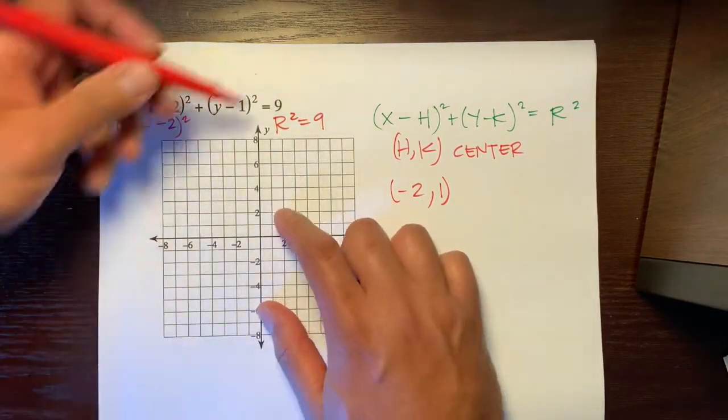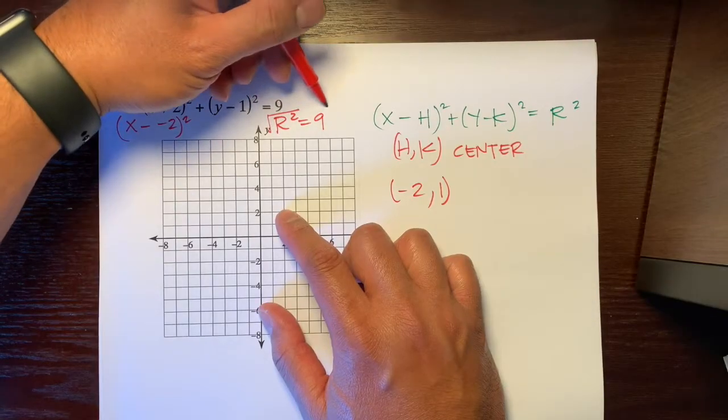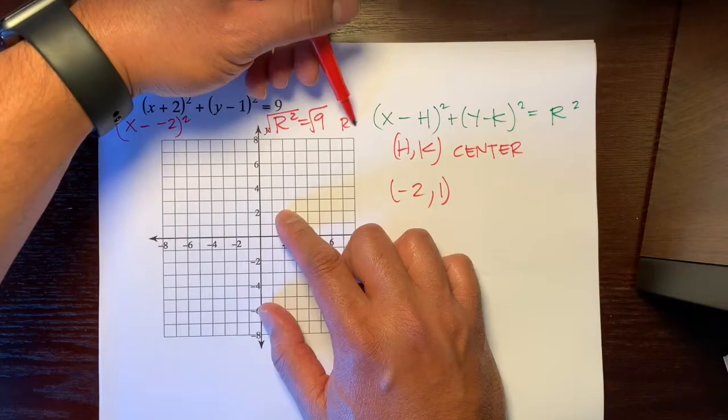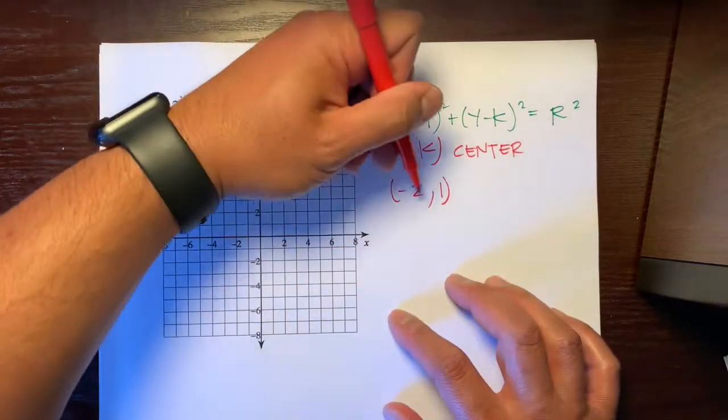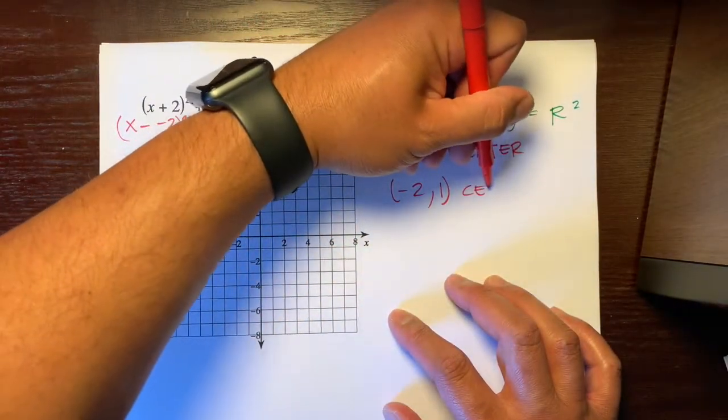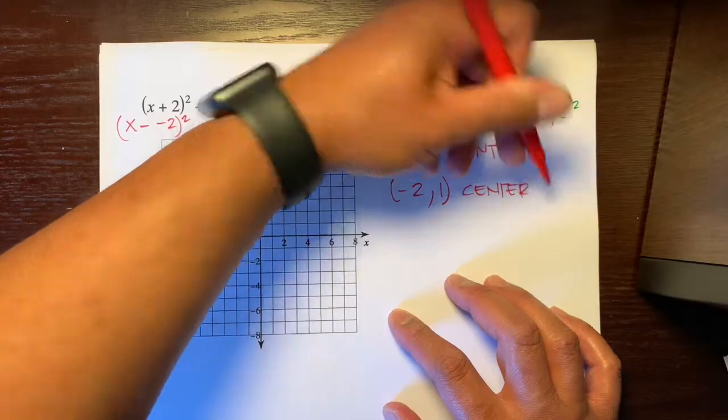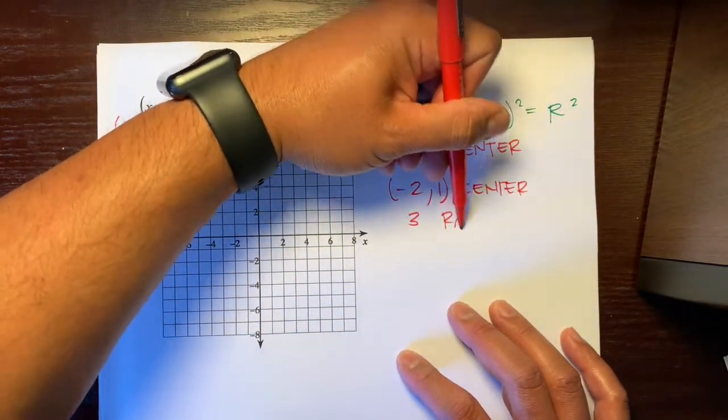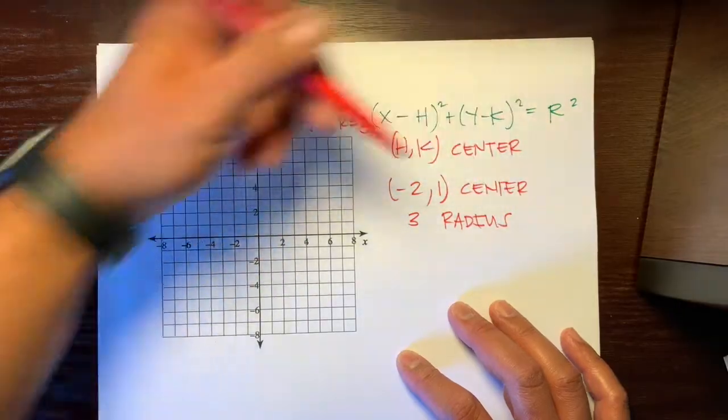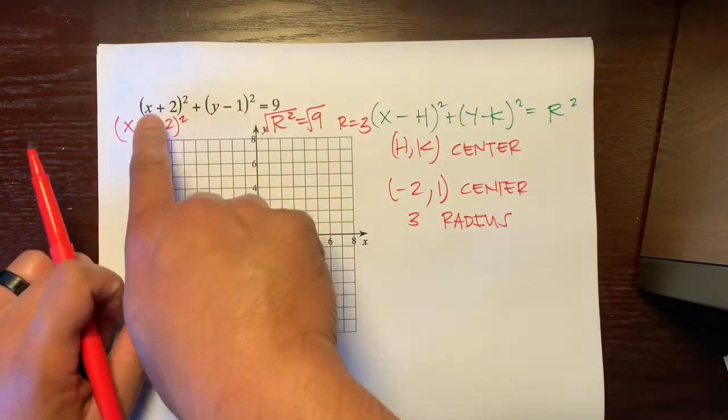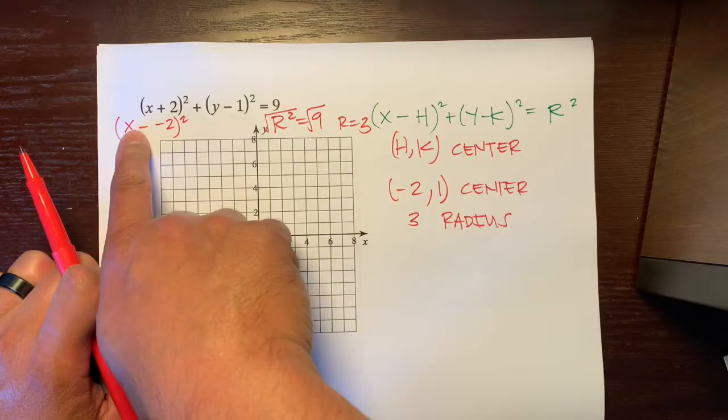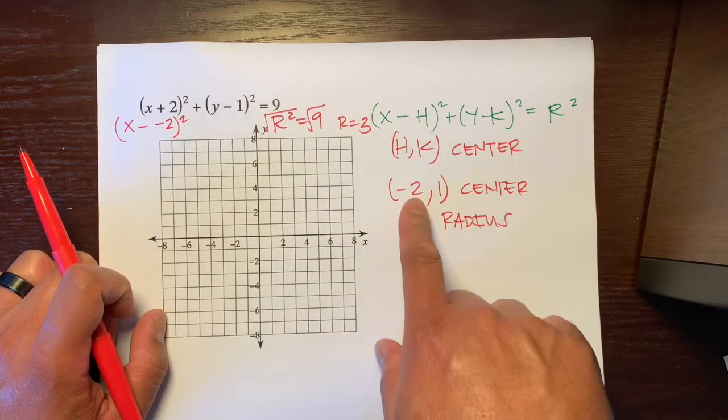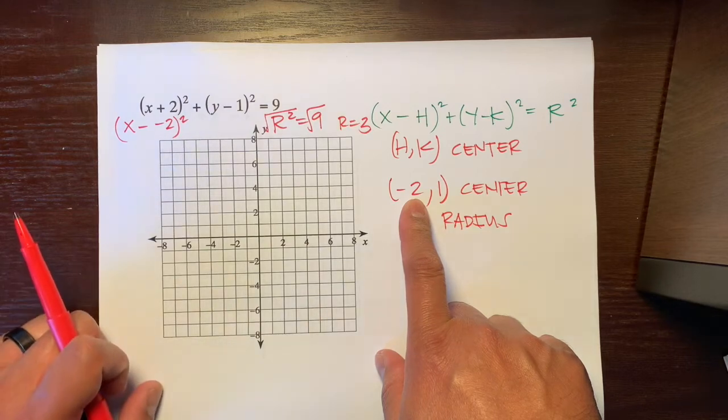The opposite of squaring something would be square rooting. So our radius would just be 3. This is our center, negative 2, 1, and 3 is our radius. The biggest thing is when you have a plus, write it as X minus, and then to get that formula.